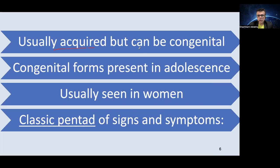Most cases are acquired, but congenital forms also occur. Although inactivating mutations are present from birth, they often manifest in adolescence. It is believed that the deficiency in the congenital form is not severe enough to cause symptoms on its own, and there must be some precipitating hematological crisis that triggers complete ADAMTS13 deficiency leading to TTP. Most cases are seen in women, as women are more predisposed to autoimmune conditions, resulting in increased incidence of TTP compared to men.